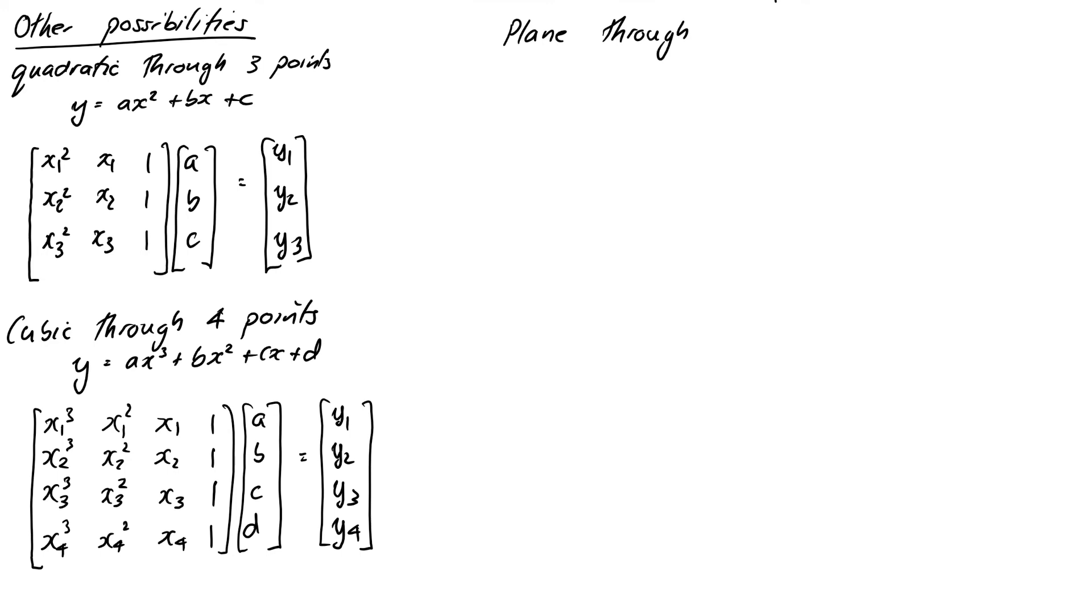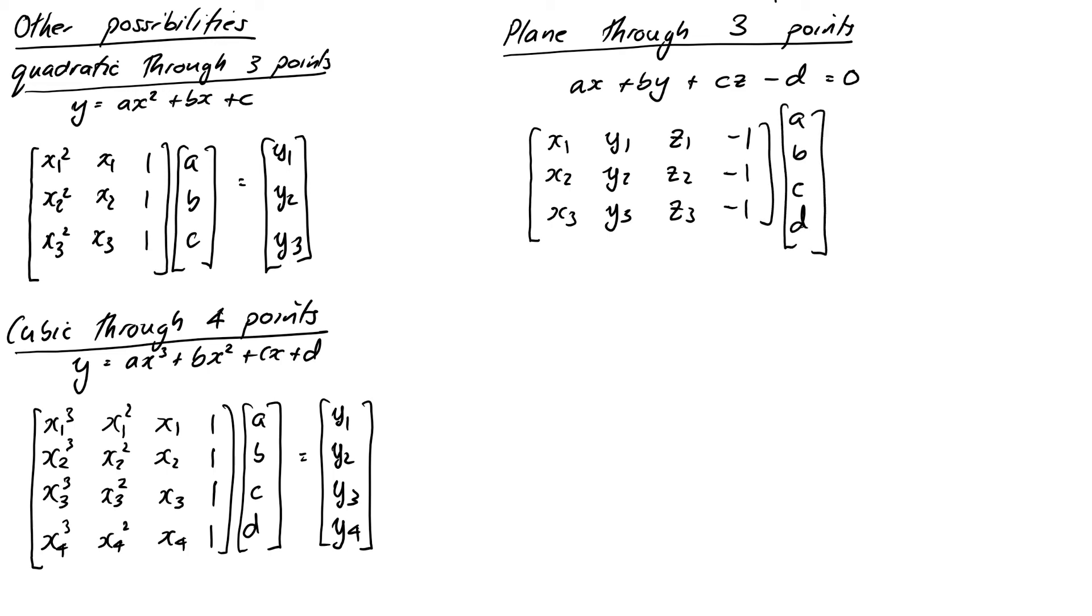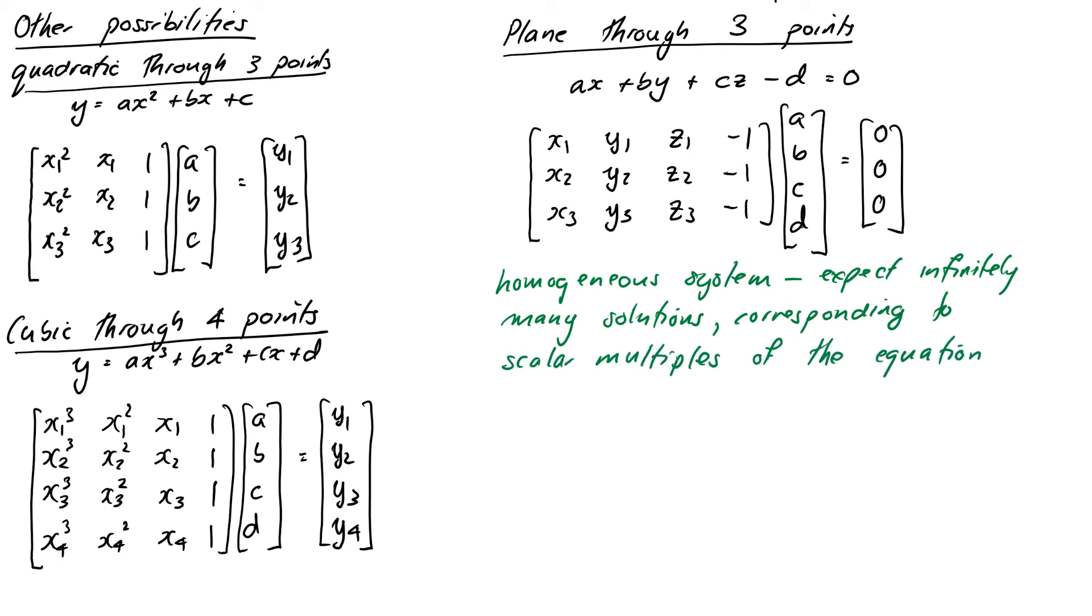Likewise, we could find the plane through 3 points. We've already done this one way before when we did cross products and direction vectors and things. But you can also find it directly using this method as well. So this time we know we need 3 points. So we'd take our general equation, A x plus B y plus C z minus D equals 0. Substitute our points. This is very similar to our first line equation we started with in the video. Solve it. And again, this is another example of one where it's a homogeneous system. So it's got zeros on the right-hand side. Where we expect to find infinitely many solutions corresponding to scalar multiples of the equation. So we'd take a particular value of T to get the equation we wanted.